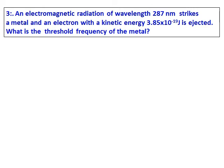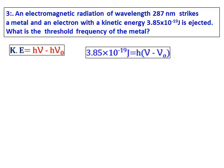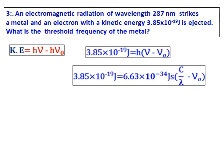An electromagnetic radiation of wavelength 287 nanometre strikes a metal and an electron with the kinetic energy of 3.85 x 10^-19 joules is ejected. What is the threshold frequency of the metal? Use the same equation but I have represented the equation in such a form that you can see the threshold frequency. Nu 0 is the one they have asked for and kinetic energy is also given.